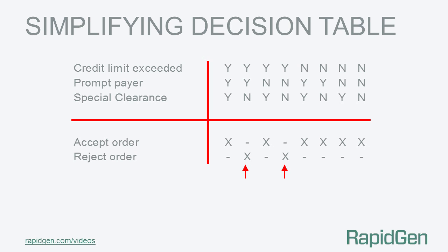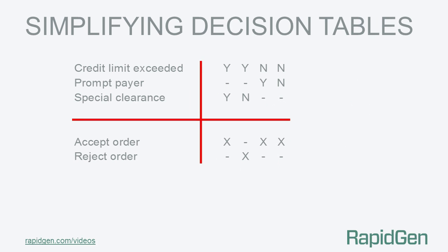The resulting table now has four rules. This table can be simplified further. Looking at rules 3 and 4, they are identical except for the second condition — is the customer a prompt payer? By simplifying these two rules, the resulting table will have just three rules, with a third rule of N dash dash X dash.